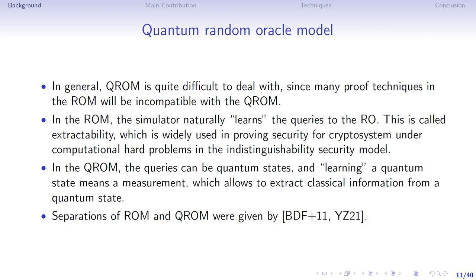In general, the quantum random oracle model is quite difficult to deal with, since many proof techniques in the random oracle model are incompatible with the quantum random oracle model. In the random oracle model, the simulator naturally extracts queries to the random oracle — this is called extractability, which is widely used in proving security for various systems and computational problems in the indistinguishable security model. In the quantum random oracle model, the queries can be quantum states, and extracting a quantum state means an operation which allows one to extract classical information from a quantum state.